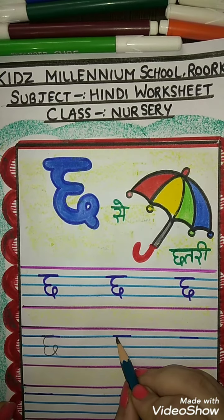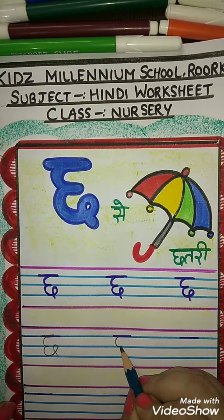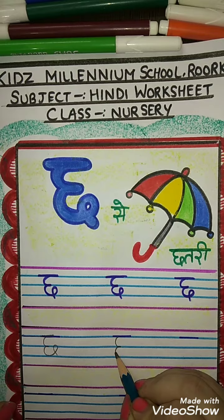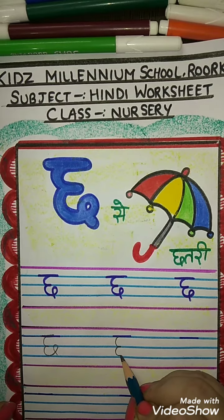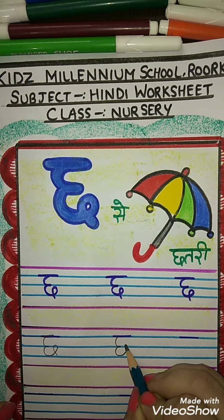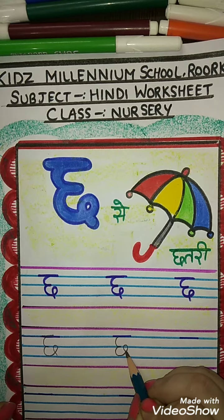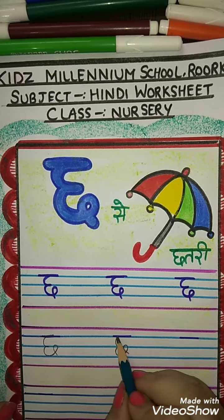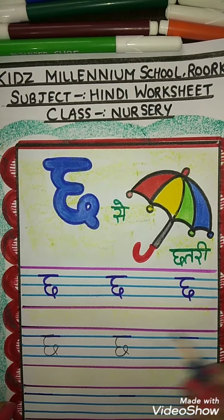Make a curve, joining with another curve. Bring it to the blue line. Then turn it down. Chh se Chhatri.